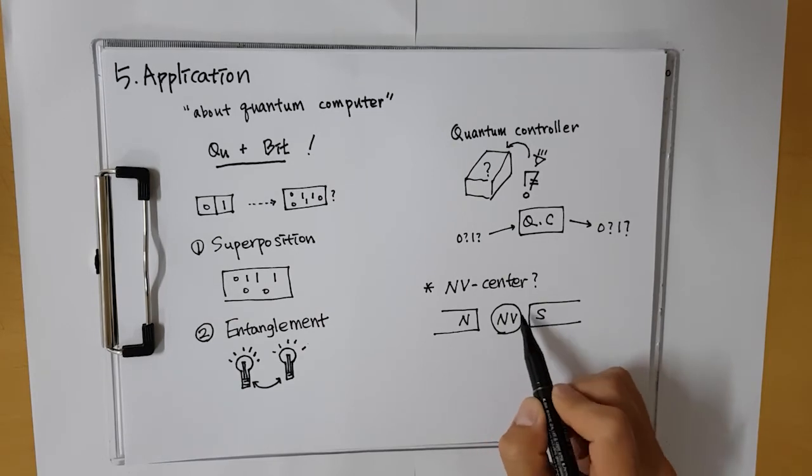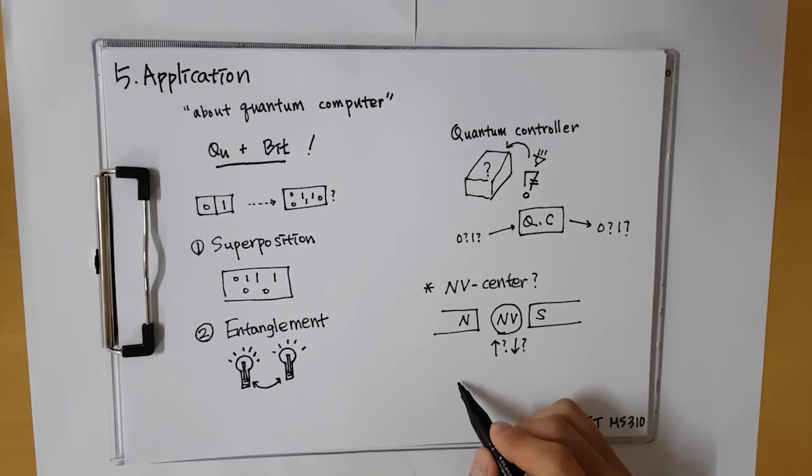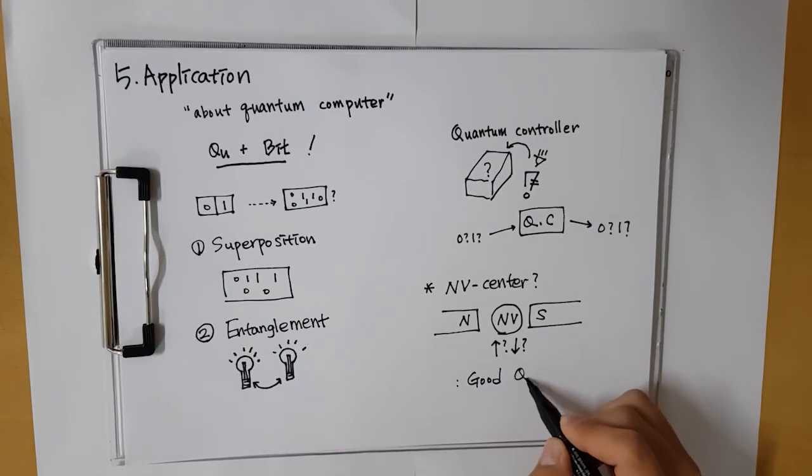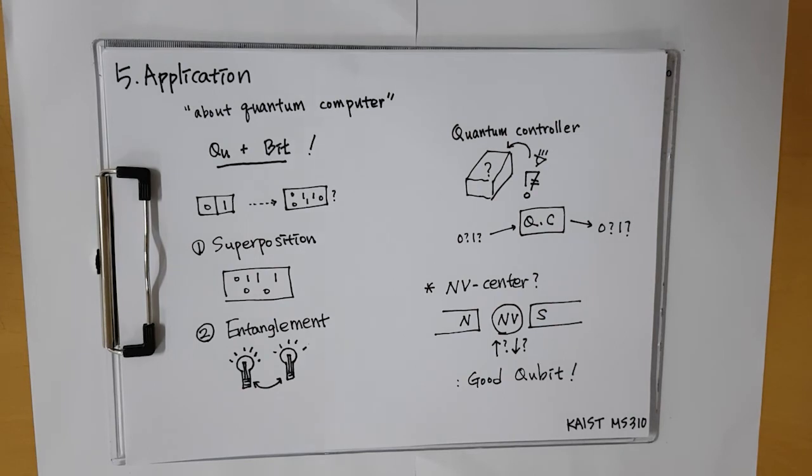Exposure to a strong magnetic field causes the electron spin around the NV center to form up and down stage superposition. NV center technology can stay in superposition stage for 1,000 times longer than other technologies.